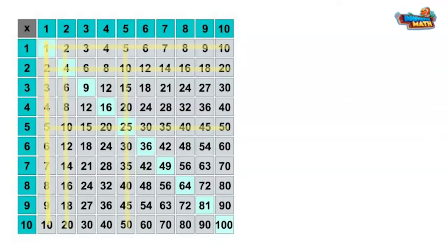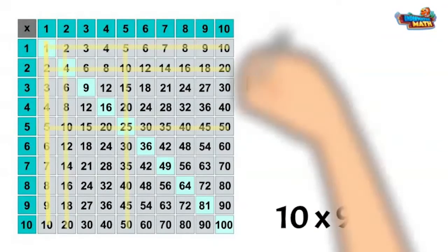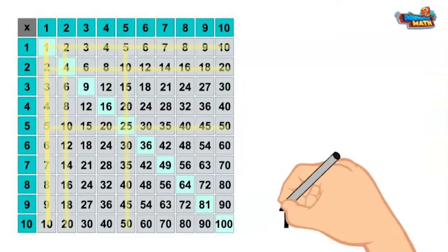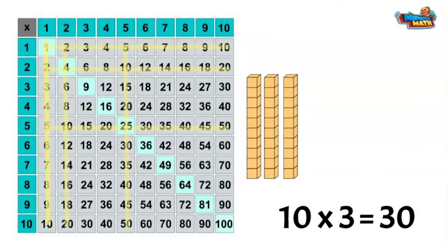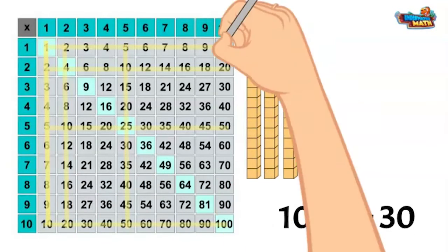When multiplying by ten, add a zero to the number being multiplied to find the product. Ten times nine equals ninety. Ten times three equals thirty. Highlight these rows and columns.